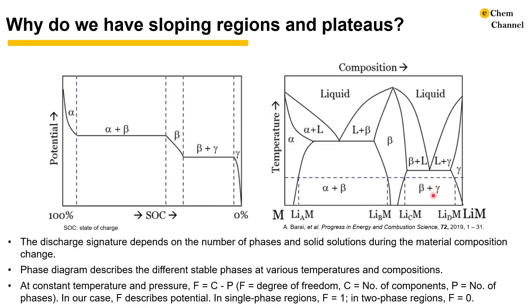The Gibbs phase rule describes the plateau behavior. When temperature and pressure are constant, the degree of freedom is equal to the subtraction of the number of components and the number of phases. The degree of freedom describes the number of independent intensive variables that can be varied independently. In our case, it's the potential. The number of components is the number of chemically distinct ingredients of a phase. The combination of components must describe all the possible compositions of the phase. In our case, we have lithium and M. For the number of phases, we can read from the phase diagram.